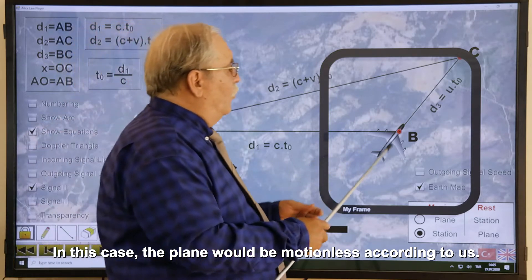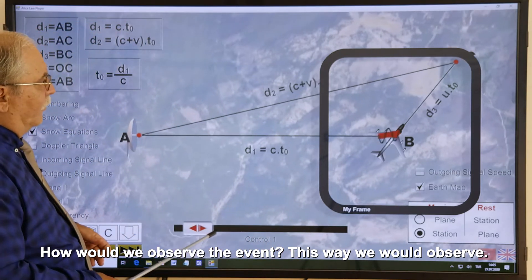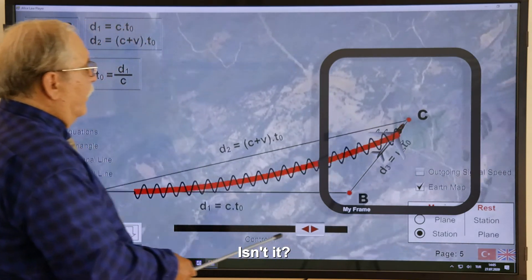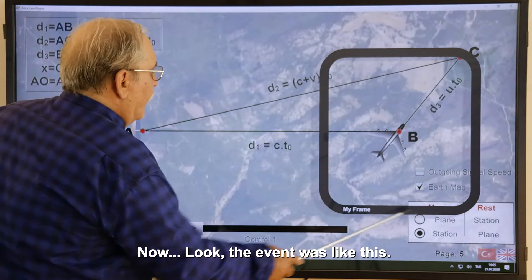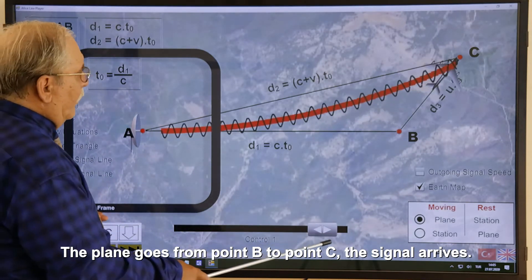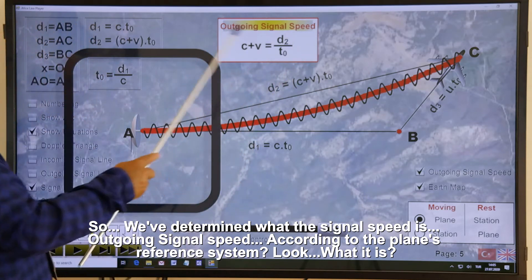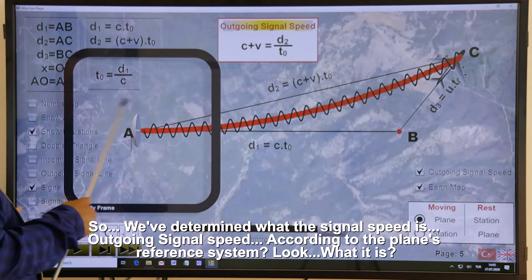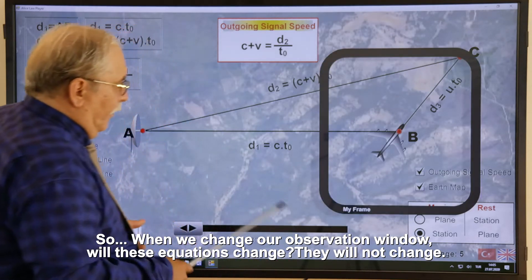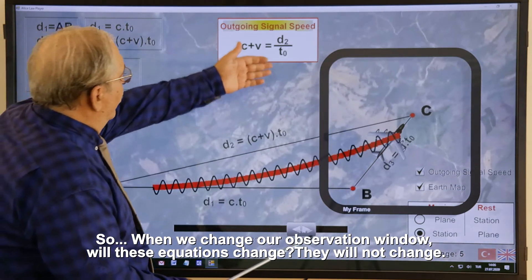In this case, the plane would be motionless according to us. How would we observe the event? This way we would observe. Now look, the event was like this. The plane goes from point B to point C, the signal arrives. So, we've determined what the signal speed is, outgoing signal speed, according to the plane's reference system. Look, what it is? These equations were formed like this. So, when we change our observation window, will these equations change? They will not change.